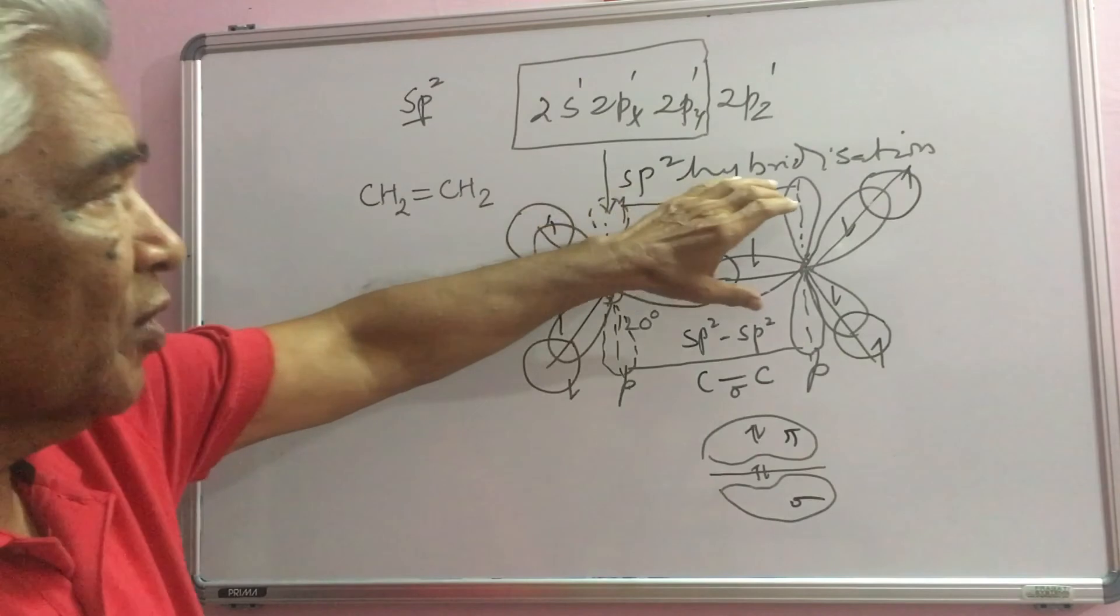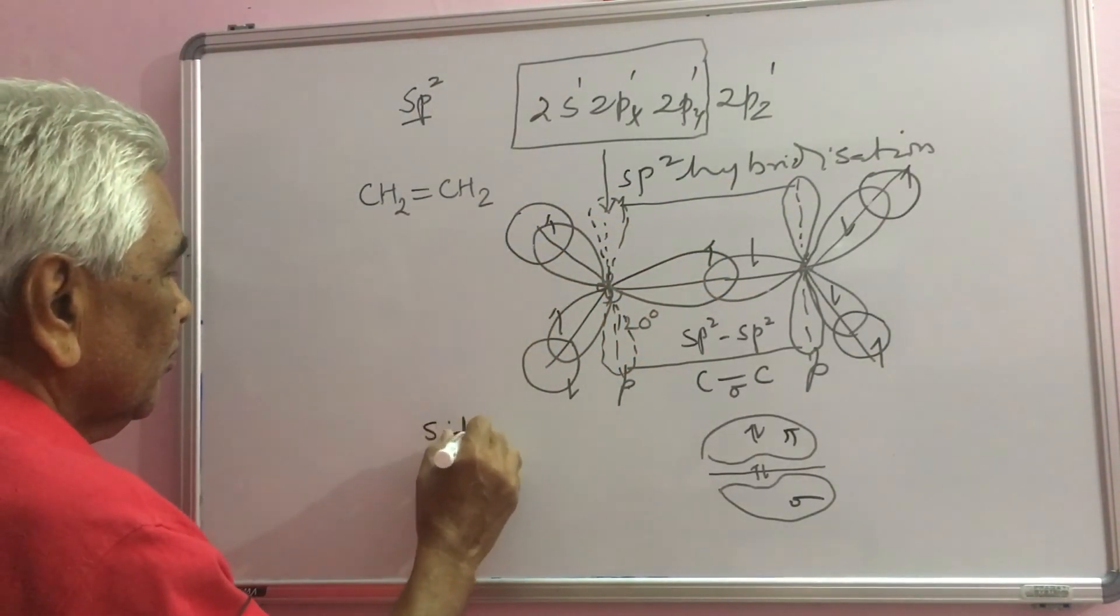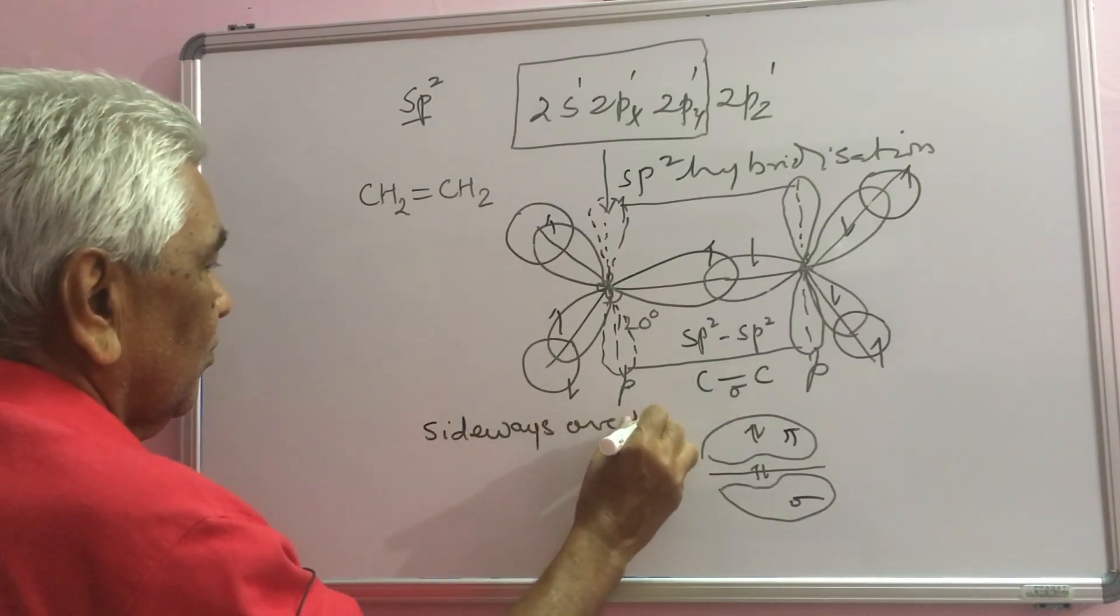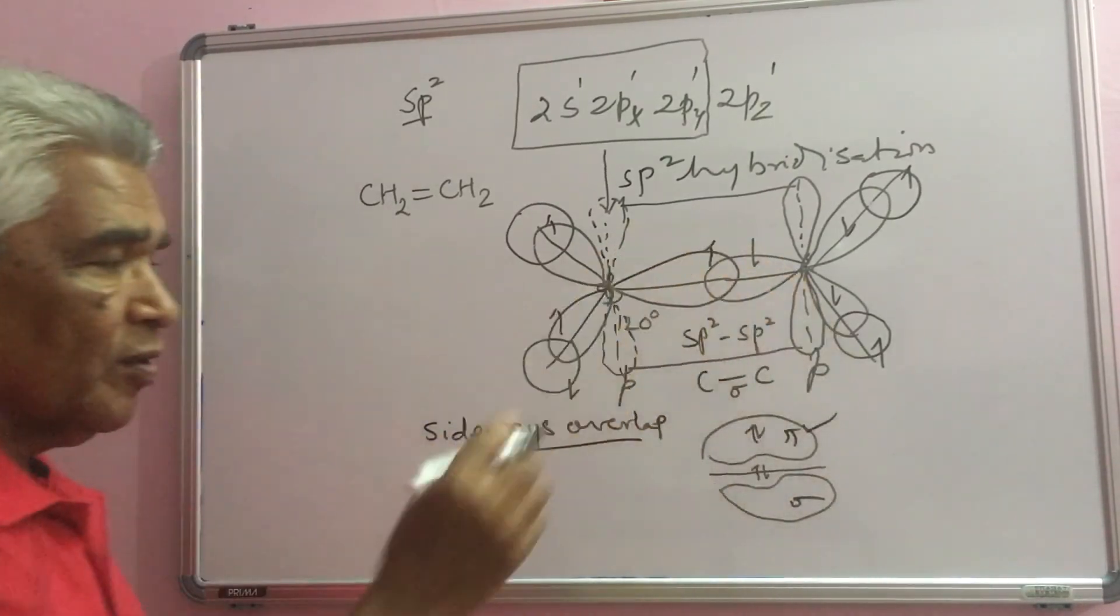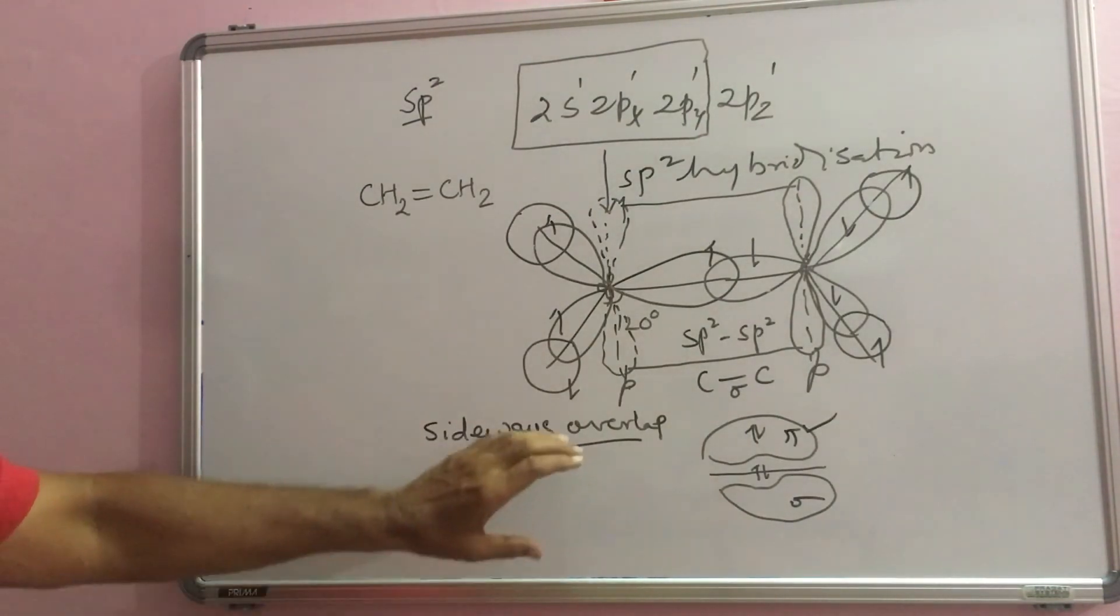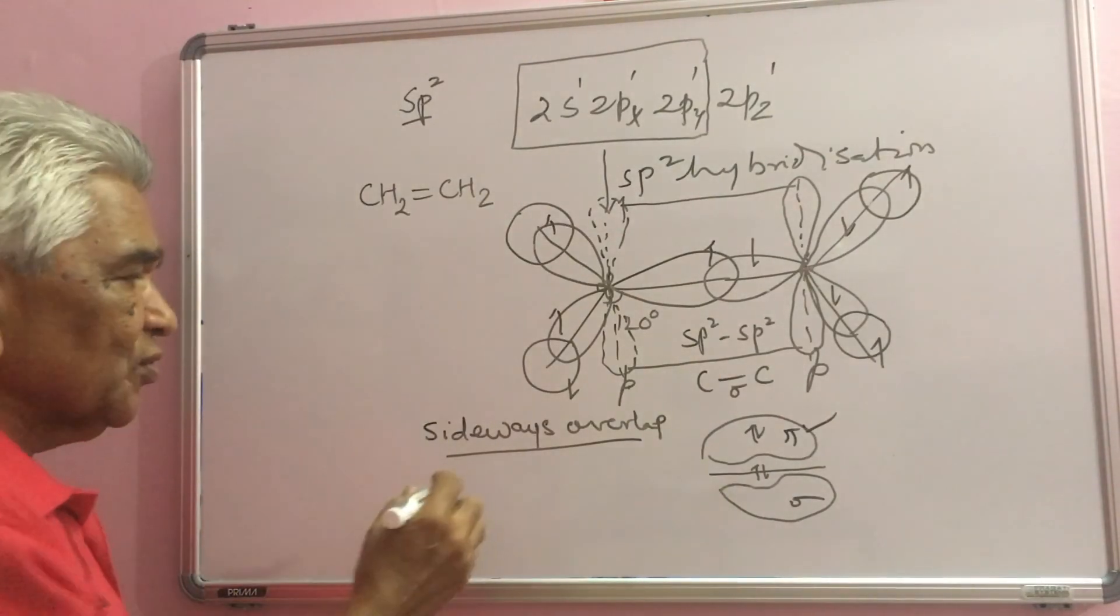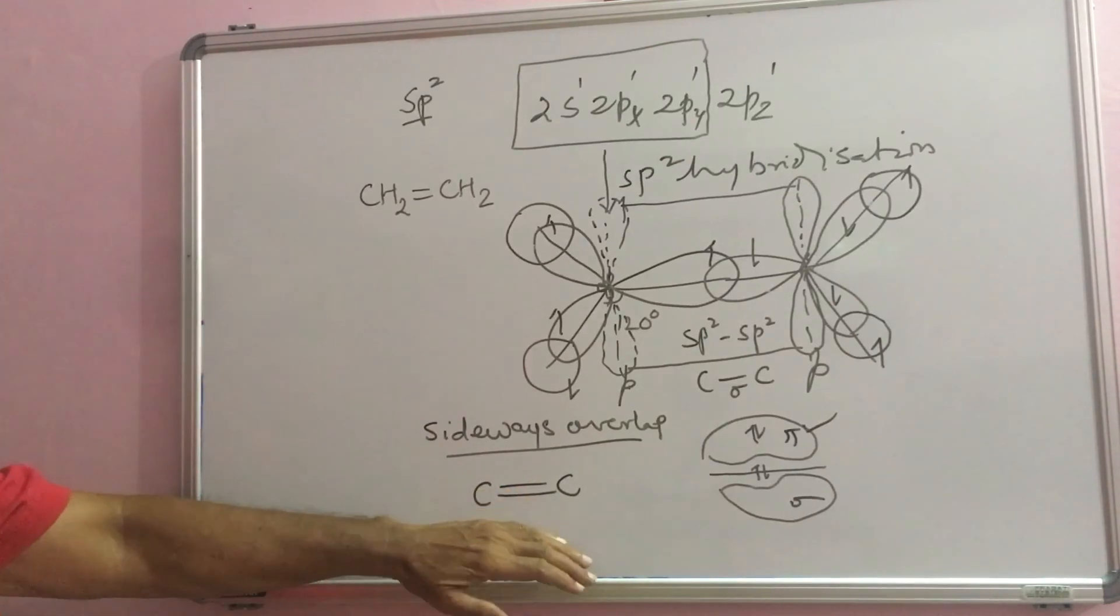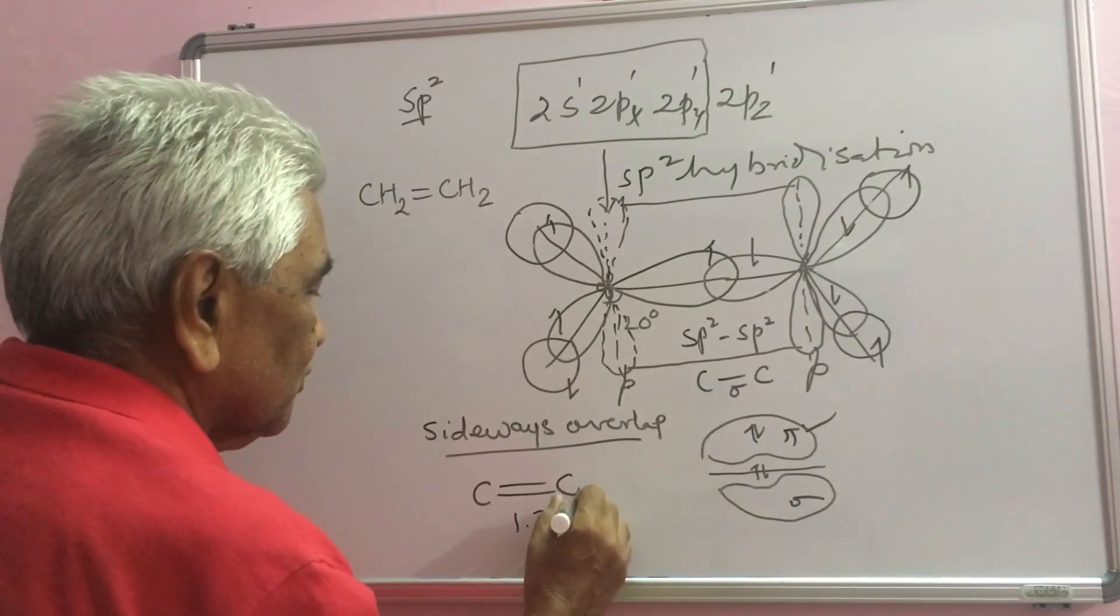This is known as a pi bond. The pi-pi overlap occurs parallelly. This is known as sideways overlap forming a pi bond or pi molecular orbital. Sigma together with pi constitutes a double bond, in this case C double bond C. Here the bond length is 1.34 angstrom units.